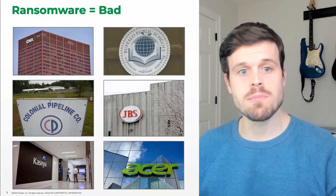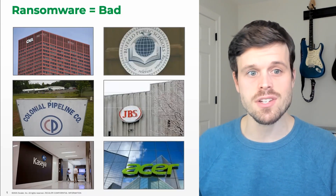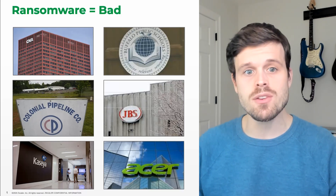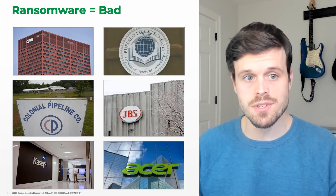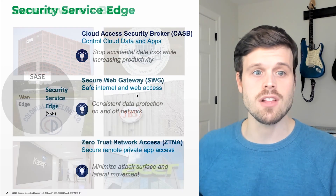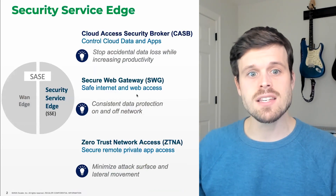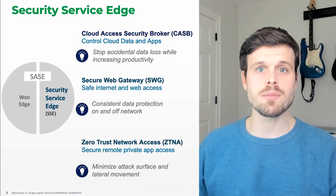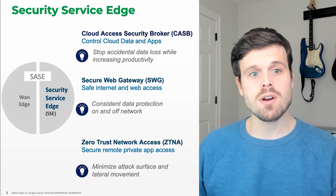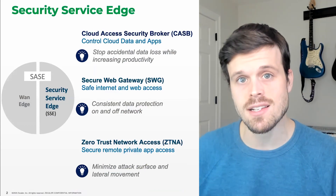Stopping ransomware requires a commitment to zero trust, which is really hard to do with legacy security technologies. This is especially true for organizations that have distributed users and applications and workloads. Gartner has defined a new category to address these challenges called the Security Service Edge, or SSE. SSE offerings make it much more practical to deploy zero trust in meaningful ways, providing the protection that organizations need against attacks like ransomware, especially in today's cloud-first world.